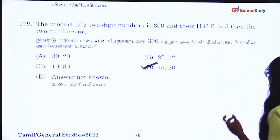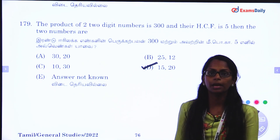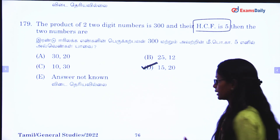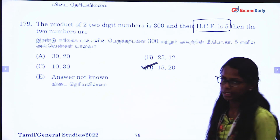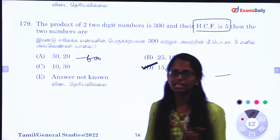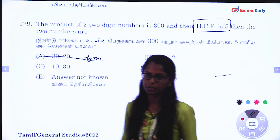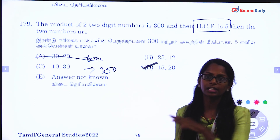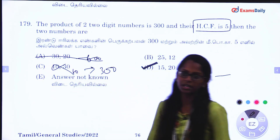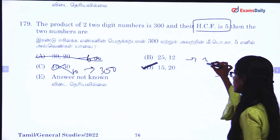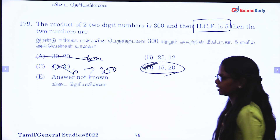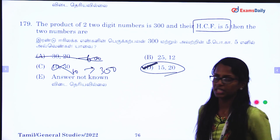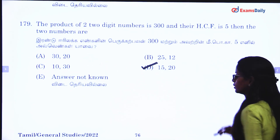Next question. The product of two two-digit numbers is 300. Two numbers multiplied give 300, and the HCF is 5. The two numbers are different. If you multiply, it could be 326 or 600 — but multiplication is 300. So if HCF is 5 and not 10, using the 5 table, the answer is 50 and 20.